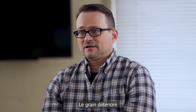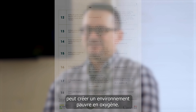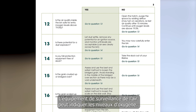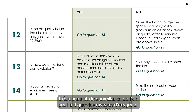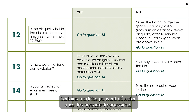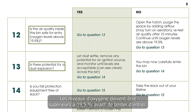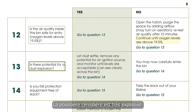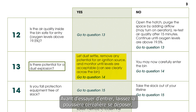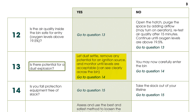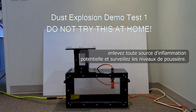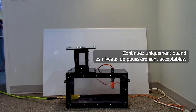Out-of-condition grain can create an oxygen-deficient environment. Air monitoring equipment can indicate levels of oxygen — some models can also detect dust levels. Oxygen levels need to be above 19.5% before attempting entry. Grain dust is highly explosive, so before attempting entry, let any grain dust settle, remove any potential ignition sources, and monitor dust levels. Proceed only once dust levels are acceptable.